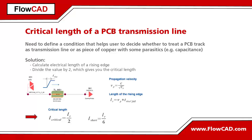First of all, we calculate the length of the rising edge by multiplying the rise time with the propagation velocity. The critical length is defined as the length of the rising edge divided by 2. Any track longer than the critical length has to be considered as a transmission line, causing delay and reflection.